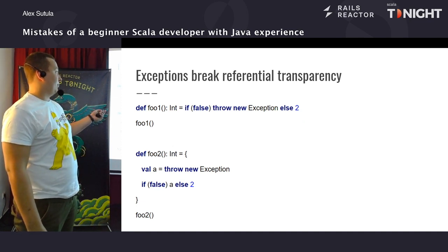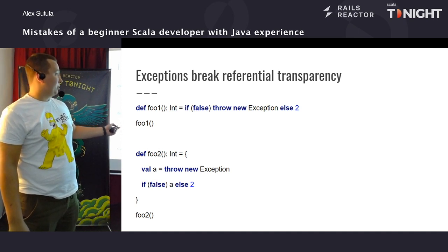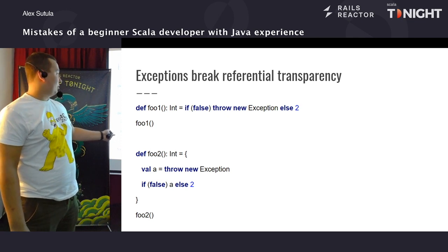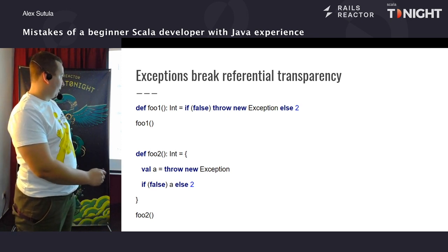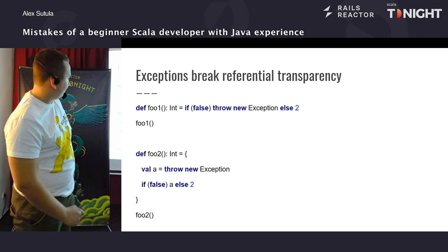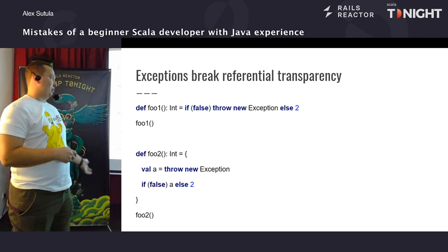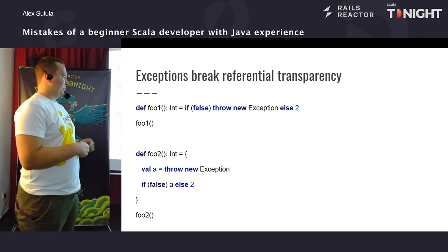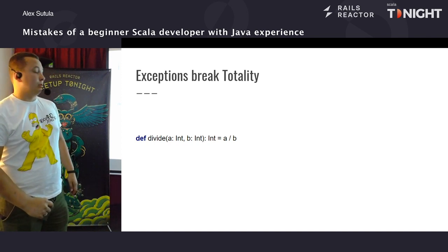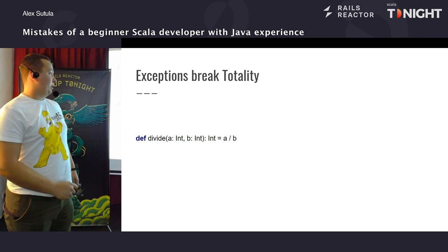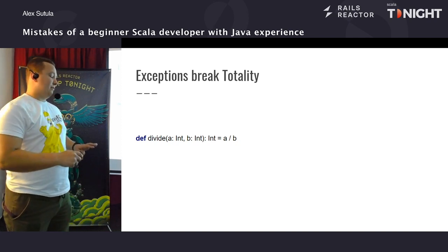Також кидання exception ламає referential transparency. У нас є такий код: припустимо, цю функцію ми її переносимо в інше місце. Ці дві функції, якщо ми їх будемо вставляти, повертають нам зовсім інше — тут два повернеться, а тут, відповідно, кинеться exception. Таку функцію вже важче тестувати. І також ламається totality — функція вже не визначена на всьому проміжку. Якщо B буде 0, то в нас кинеться exception. Тобто функція не призначена для того, щоб хендлити цю ситуацію — а значить вона вже не є чистою.